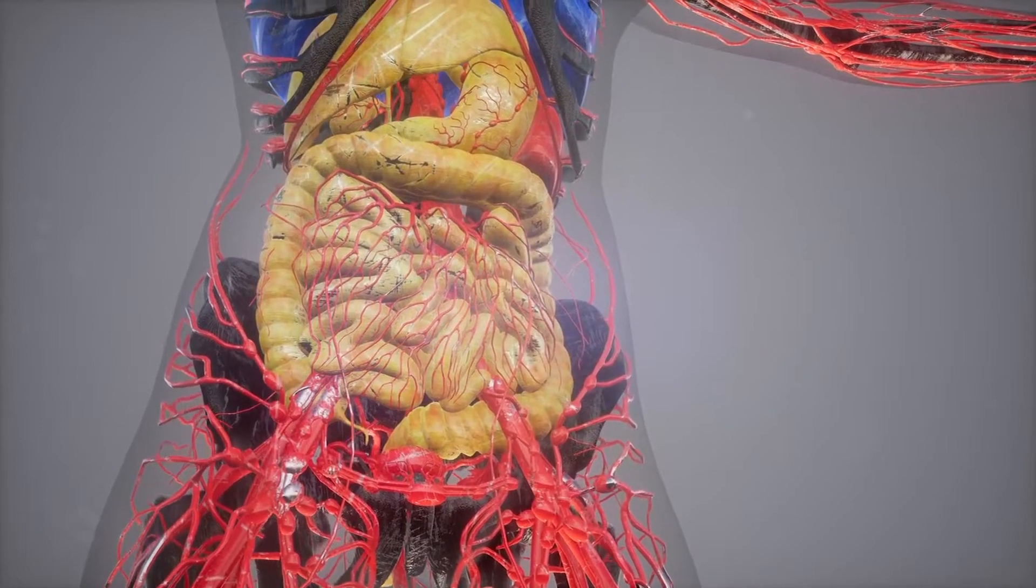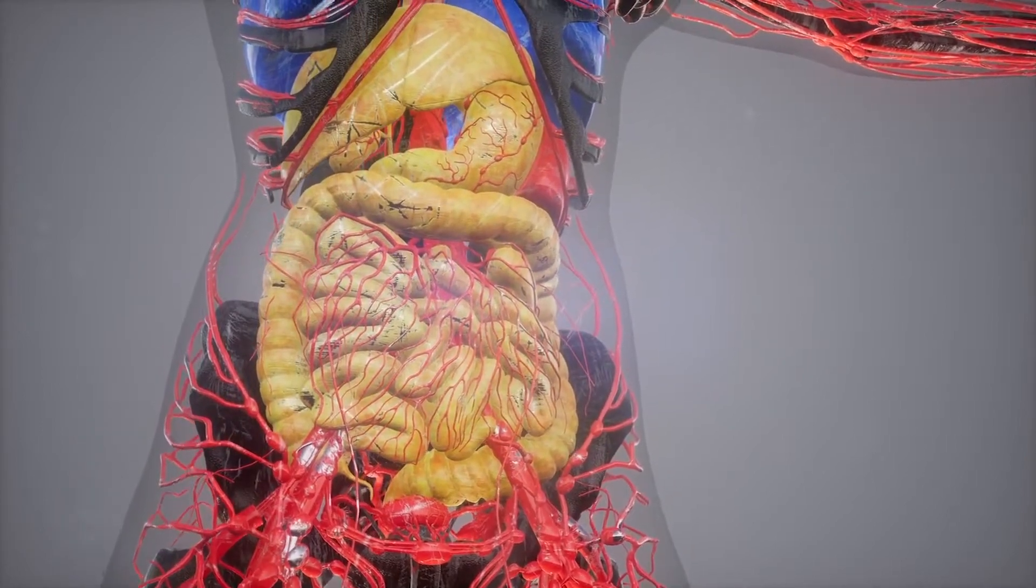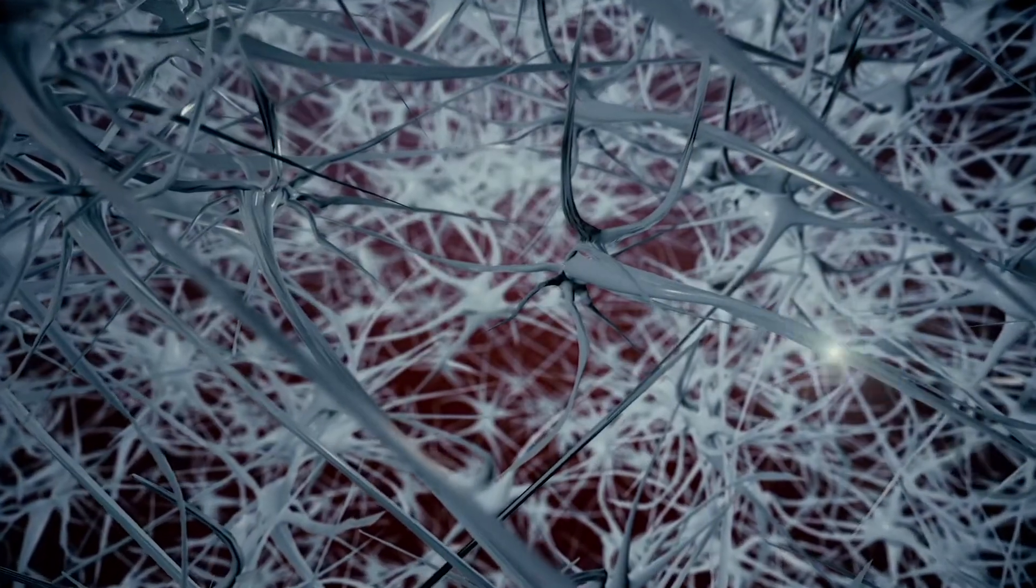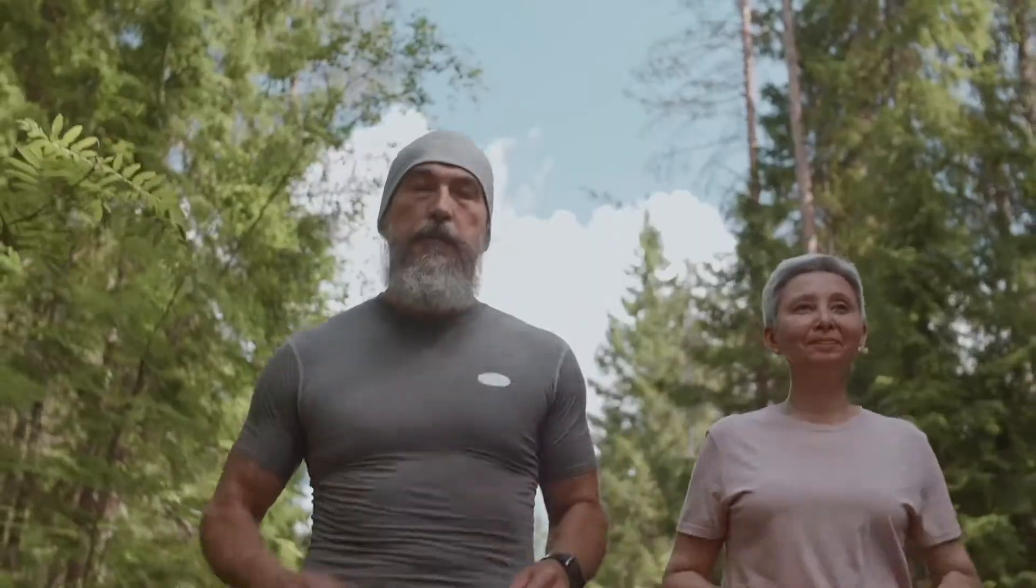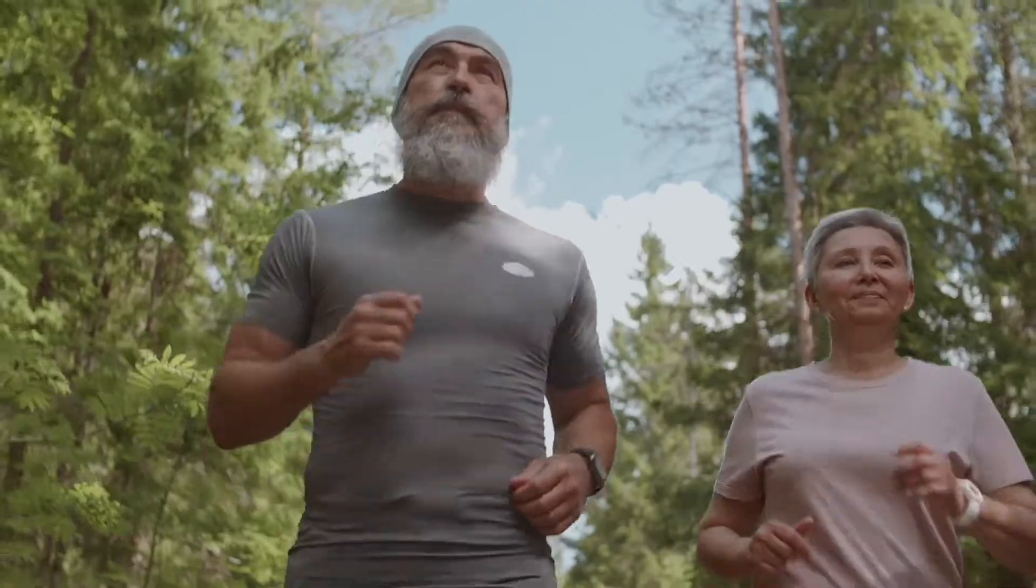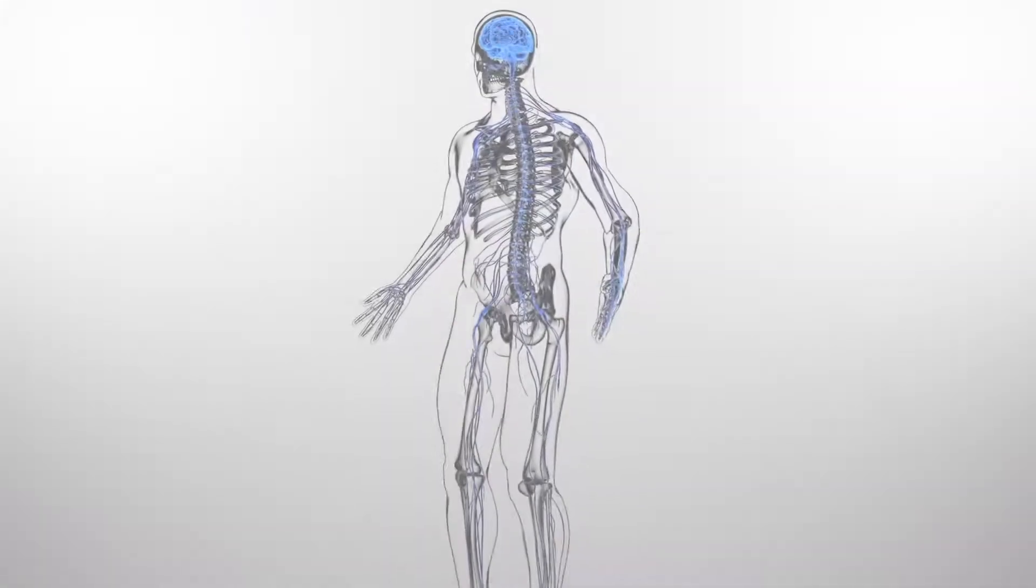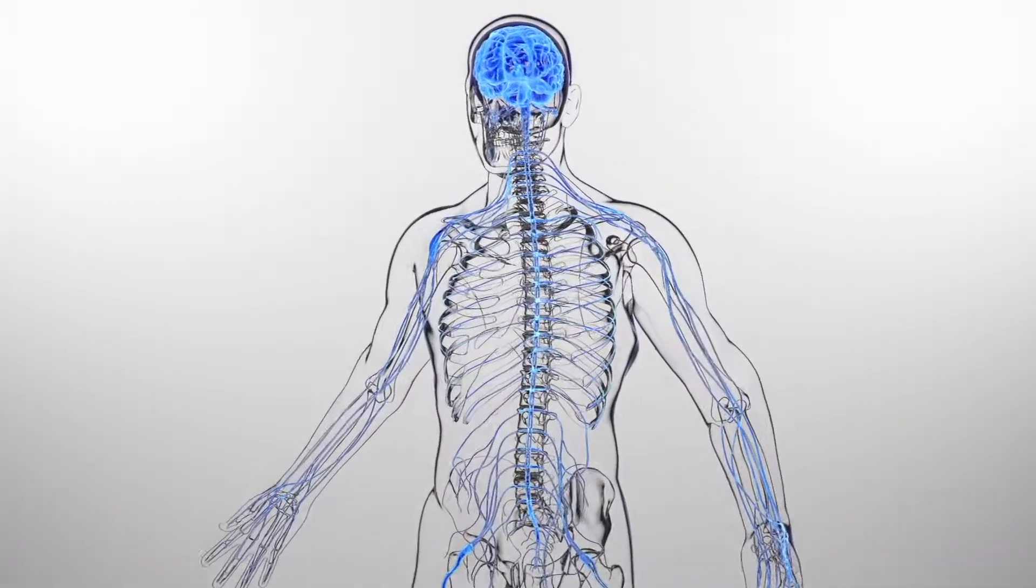It's also responsible for providing the electrical stimulus that triggers skeletal muscle to contract. For example, when the brain tells the body to walk or run. There are two major divisions of the nervous system.